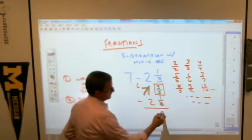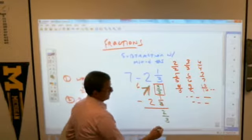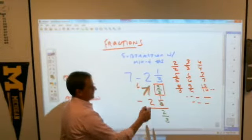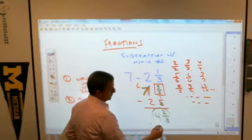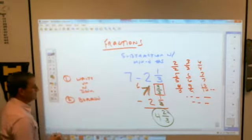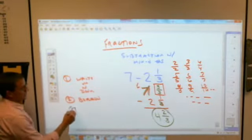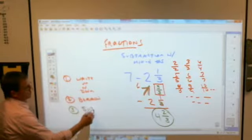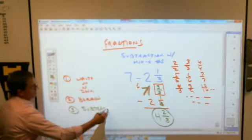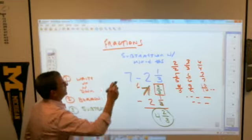And what is 3 thirds minus 1 third? Nathan? 2 thirds. 2 thirds. And what, then you have to do 6 minus 2, which is? 4 and 2 thirds. 4 and 2 thirds. So 3 is the bottom and then subtract. It's not that hard, but they take you one little step at a time.